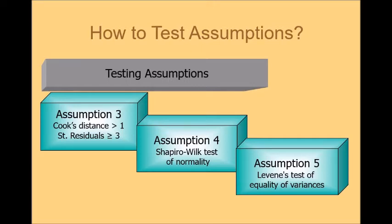Let's proceed to assumption four. You can test the normality of your data by simply running Shapiro-Wilk test in SPSS. And finally, assumption number five. You can simply conduct the Levene's test of equality of variances in SPSS to ensure that your data meet the assumption number five.